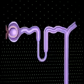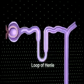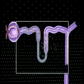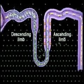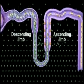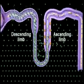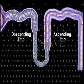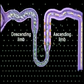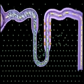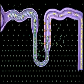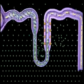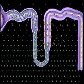The renal tubule continues as the loop of Henle, which has a descending limb passing into the kidney medulla and an ascending limb returning to the kidney cortex. Tubular fluid in the loop undergoes significant changes in osmotic concentration.